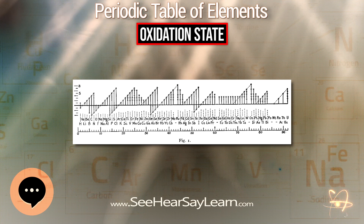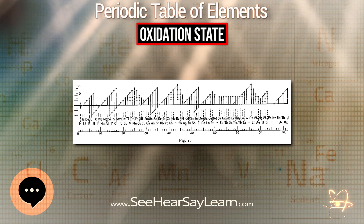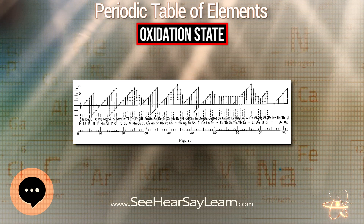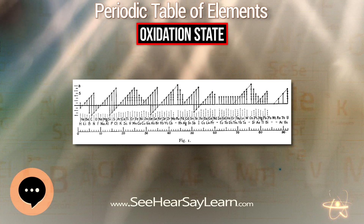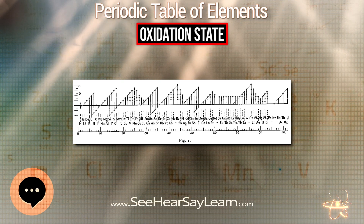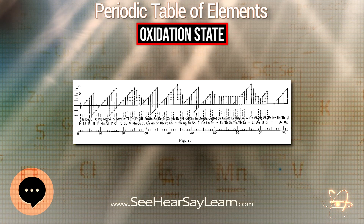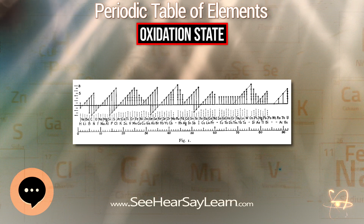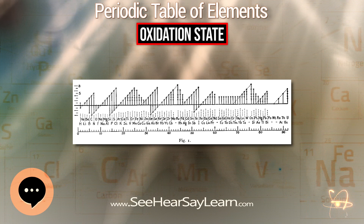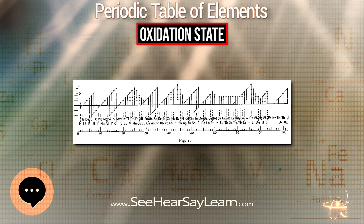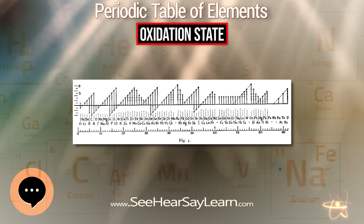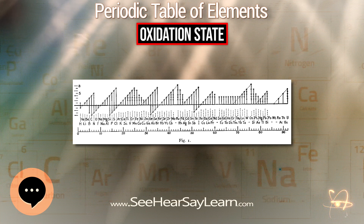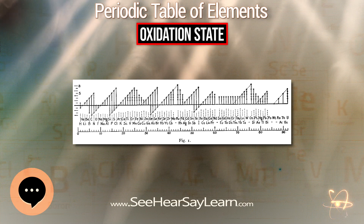The column for oxidation state 0 only shows elements known to exist in oxidation state 0 in compounds. The format of the table, which was devised by Dmitri Mendeleev in 1889, shows the periodicity of the oxidation states of the elements. A figure with a similar format was used by Irving Langmuir in 1919.